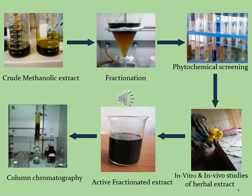The methanol extract is now converted into solid mass using a rotary evaporator. The next step is fractionation. Distilled water and methanol are added to the solid mass to obtain two layers. Fractionation is carried out using organic solvents: n-hexane, chloroform, ethyl acetate, and butanol. We get four different fractions — n-hexane fraction, chloroform fraction, ethyl acetate fraction, butanol fraction, and aqueous fraction.